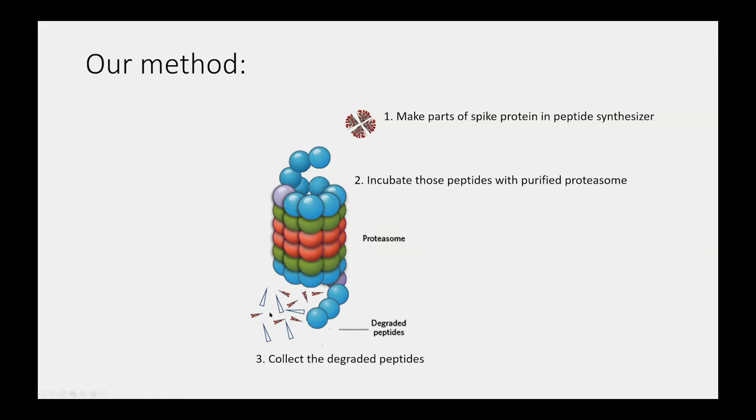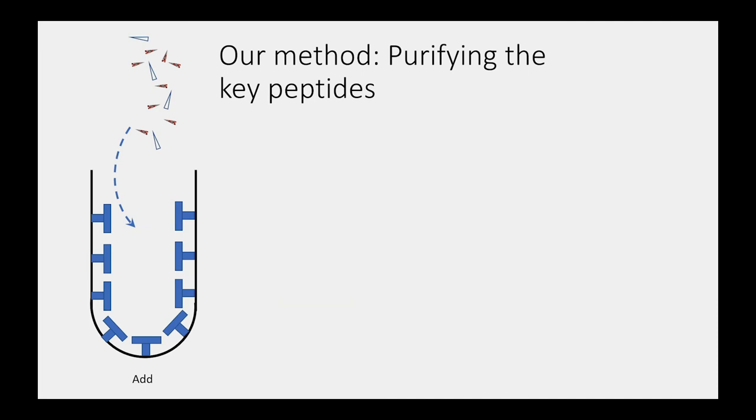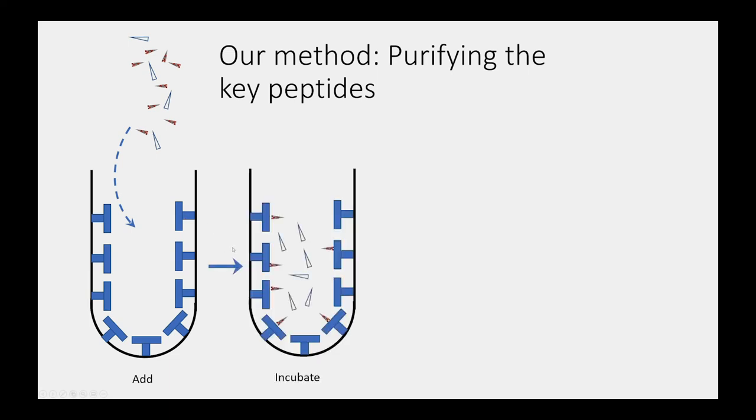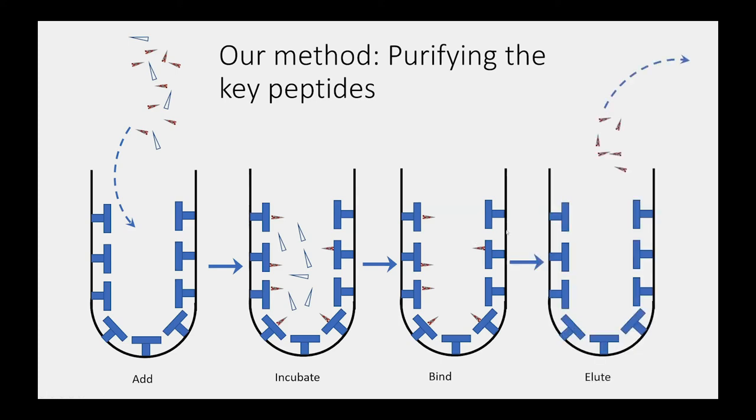Now, some of the peptides are the ones that we want. Some are the ones that we don't want. And I show the ones that we don't want in the open triangles. We can collect those peptides from our proteasome digestion and then incubate it in a test tube that has the HLA molecule attached. Now, we let it incubate and the HLA molecules will recognize the virus peptides that we're interested in and specifically bind those. The ones that we don't want won't bind and they're sitting free in the aqueous solution of the test tube. Next, we can get rid of the peptides that we don't want by washing the test tube. And then we can elute the peptides that we do want off the HLA molecules for the next step.